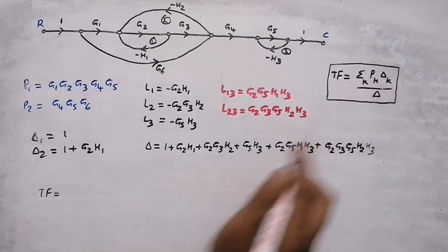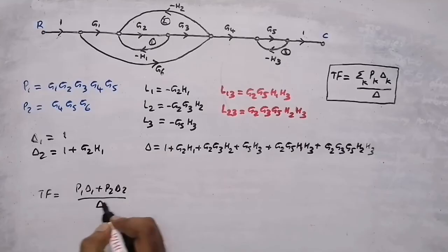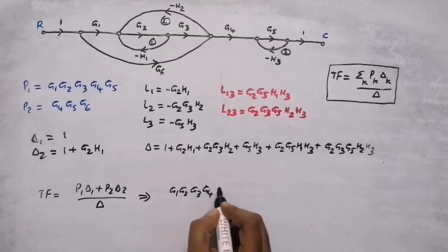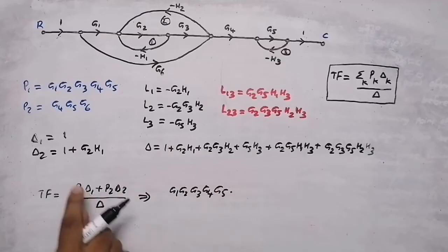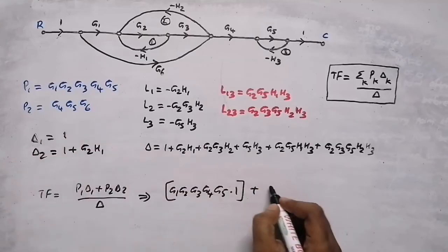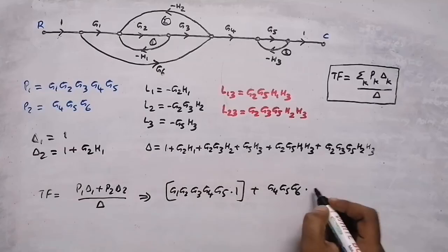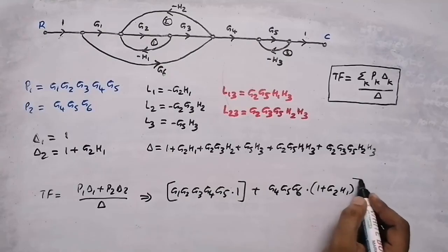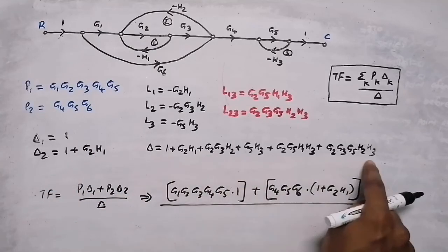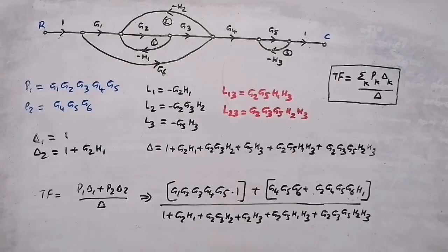Now we assemble the final transfer function: T = (P1·Δ1 + P2·Δ2) / Δ = (g1·g2·g3·g4·g5 × 1 + g4·g5·g6 × (1 + g2·h1)) / Δ. Expanding the numerator: g1·g2·g3·g4·g5 + g4·g5·g6 + g4·g5·g6·g2·h1, all divided by Δ = 1 + g2·h1 + g2·g3·h2 + g5·h3 + g2·g5·h1·h3 + g2·g3·g5·h2·h3. This is our final answer.